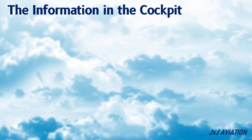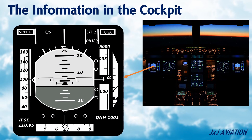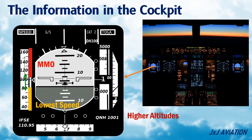The information in the cockpit. On the primary flight display, or PFD, the lowest speed at which an aircraft can fly safely is shown at the lower end of the speed scale. The maximum speed, or MMO, until which an aircraft can fly safely, is shown on the top end. This is the speed range in which an aircraft can fly safely. When an aircraft flies at higher altitudes, the aircraft flies towards the coffin corner, and this safe range decreases.